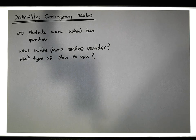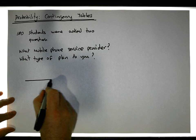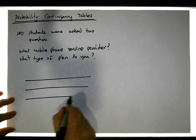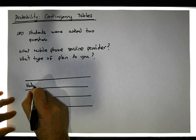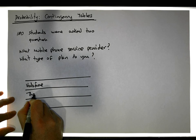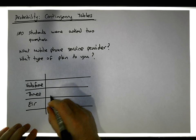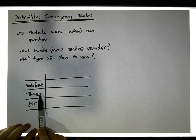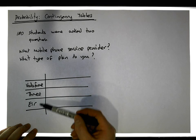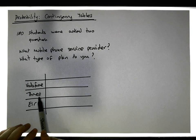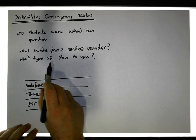Let's assume there are two types of plans. I'm constructing a table and listing the service providers down the column. So let's say we have Vodafone, Three, and Eir as the possible service providers in Ireland. Of the hundred students answering what mobile phone service provider they have, the answer is one of these three — it's a categorical variable.